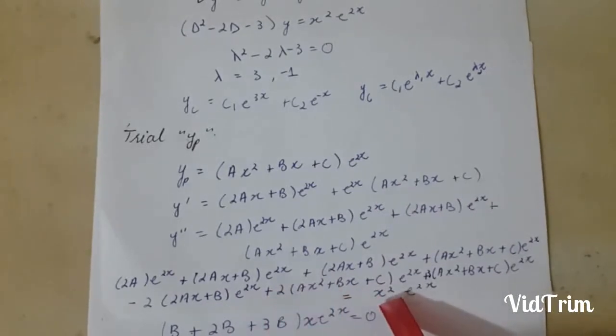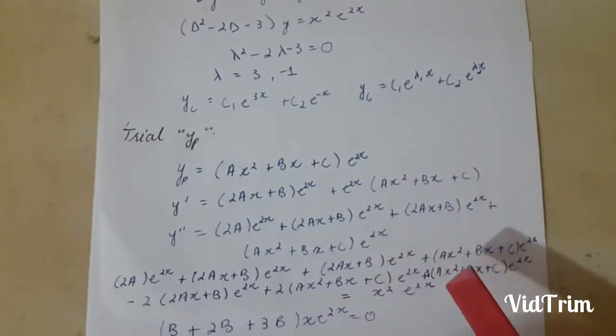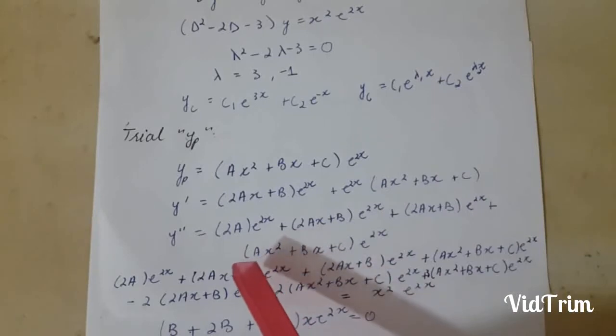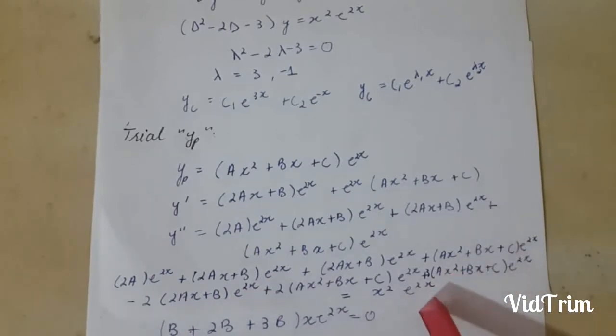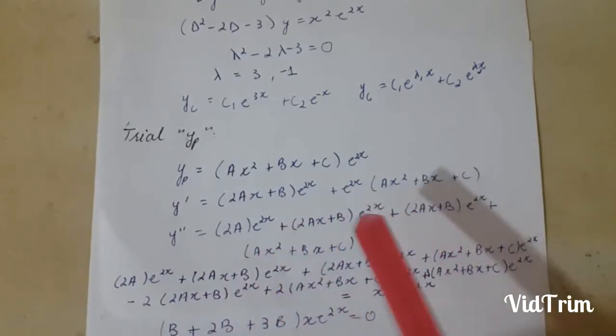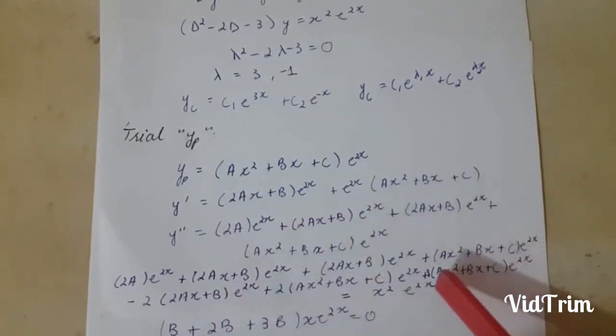Now I will compare the coefficients of e^x to the right hand side variables. Like x squared equals x squared, which term consists of x squared which also equals x squared, and which terms have x which also equals some x.